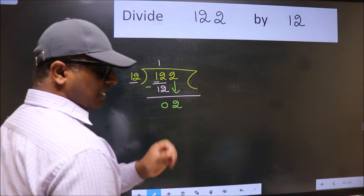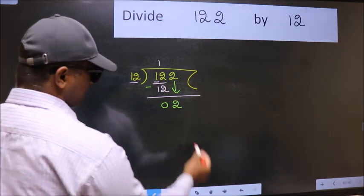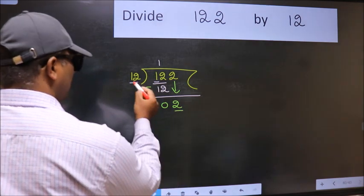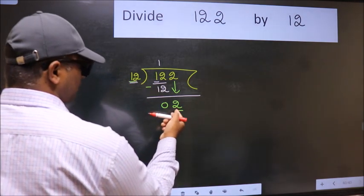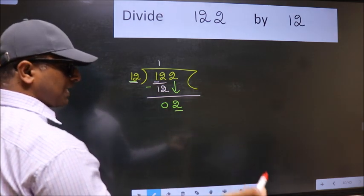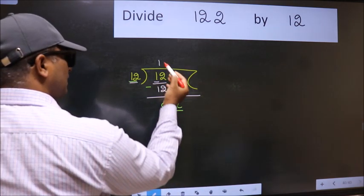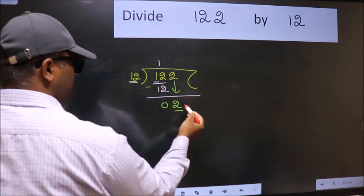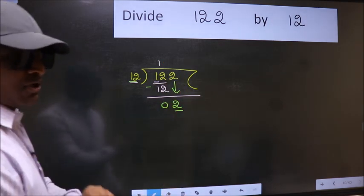After this step, the mistake happens. Here we have 2 and here 12. 2 is smaller than 12. So, what many do is they directly put dot, take 0, which is wrong.